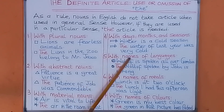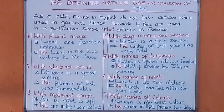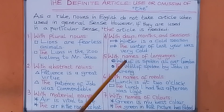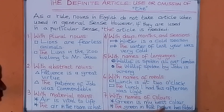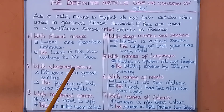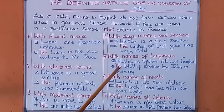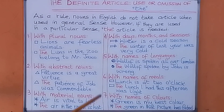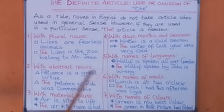Number five: with names of languages. If we use a language in a general sense, we don't need an article. For example: 'Wolof is spoken all over Gambia.' Here, we are using 'Wolof' in a general sense. But when we use it in a particular sense, we add the article: 'The Wolof spoken by John is wrong.' Here, we are using the language Wolof in a particular sense, so we have the article there.